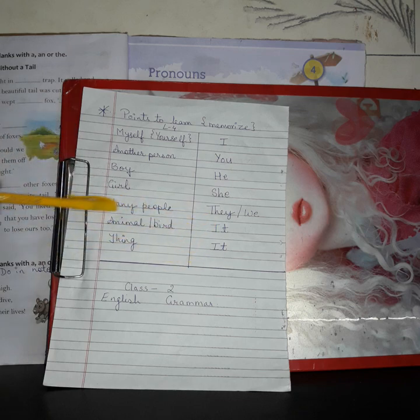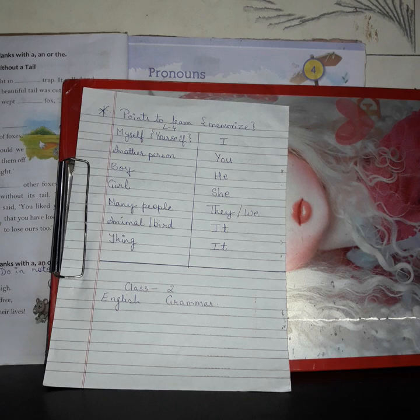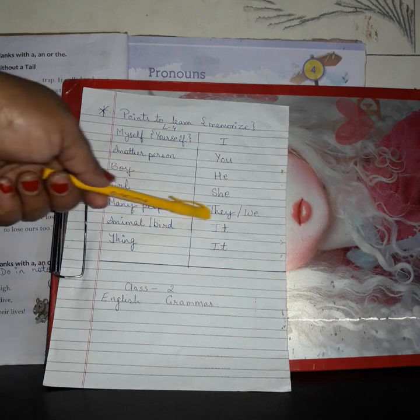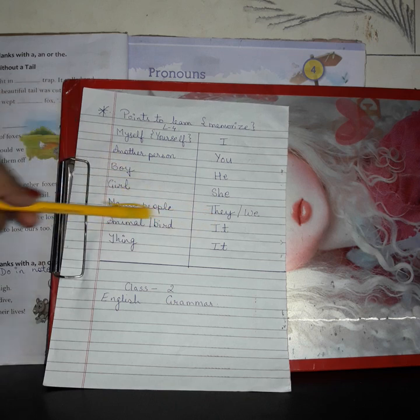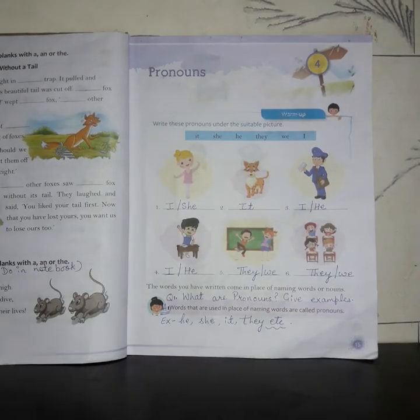For more than one, we use 'they' and 'we'. Or else we use 'it' for animal, bird, and things. Learn these points and write them neatly in a notebook.